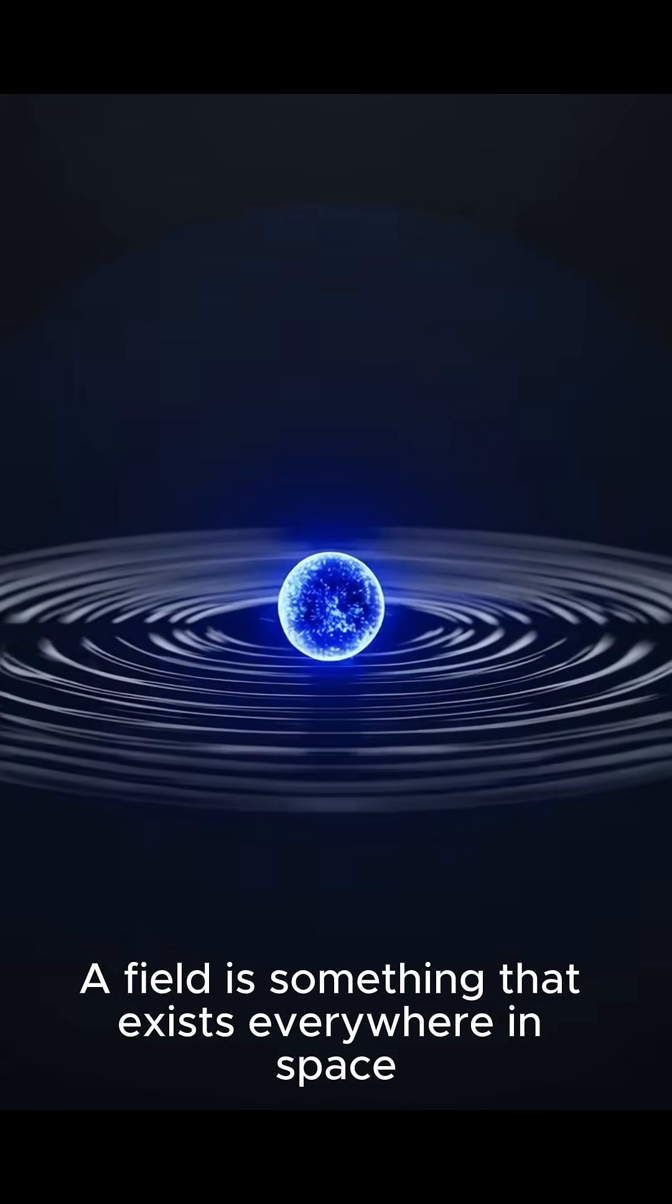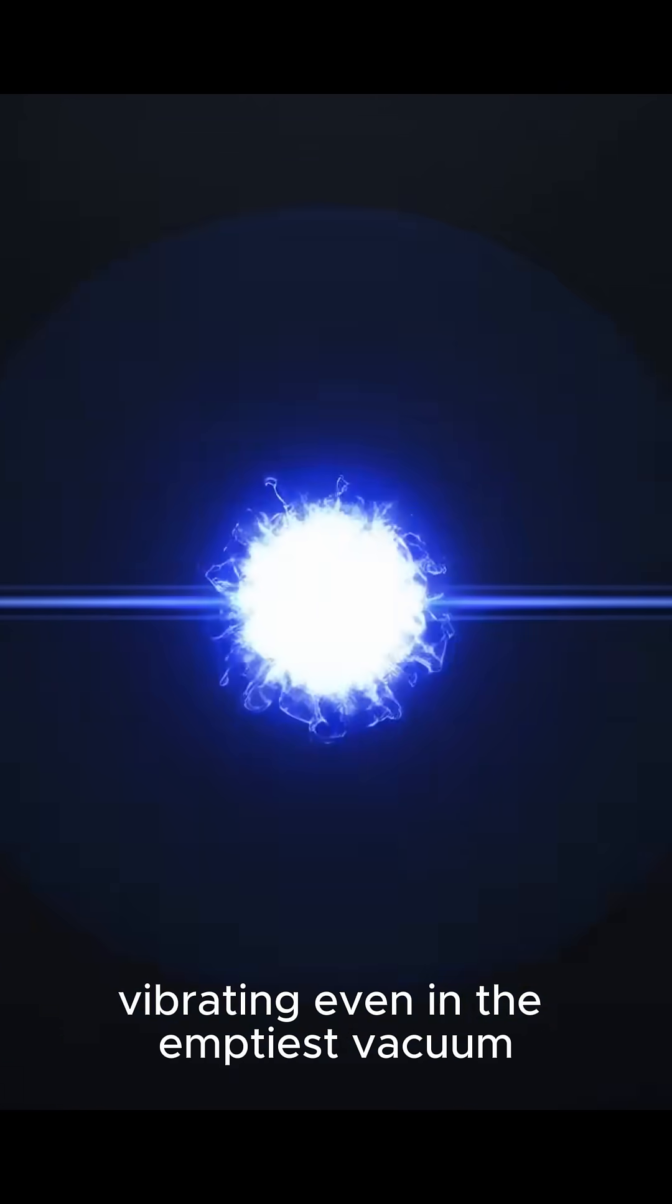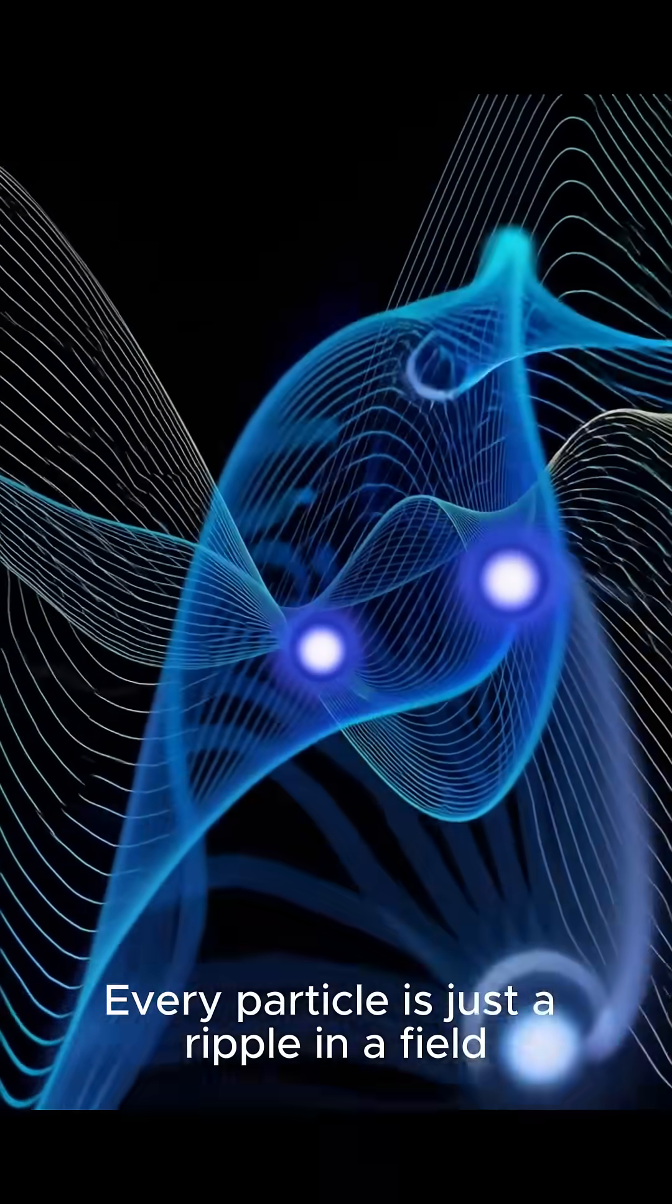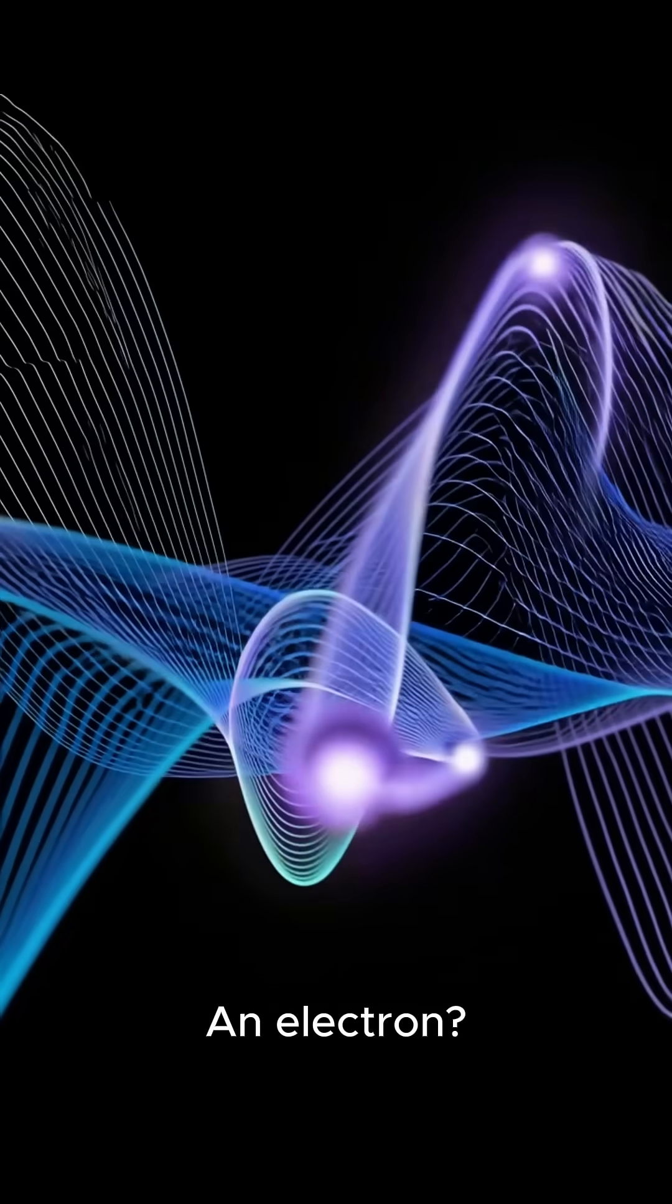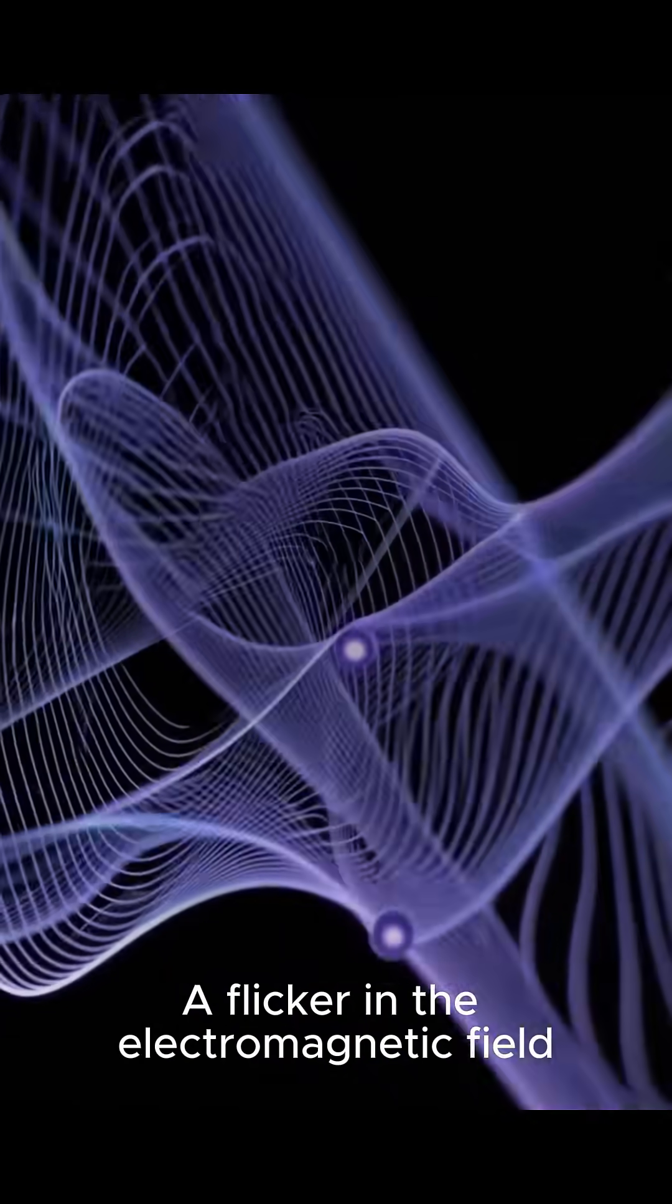A field is something that exists everywhere in space. An ocean, invisible, vibrating even in the emptiest vacuum. Every particle is just a ripple in a field. An electron, a wave in the electron field, a photon, a flicker in the electromagnetic field.